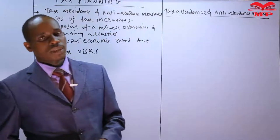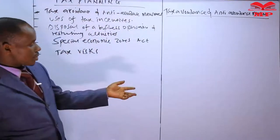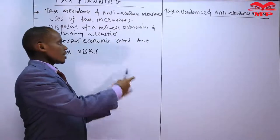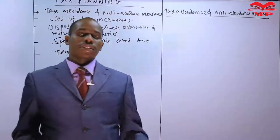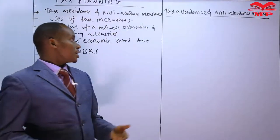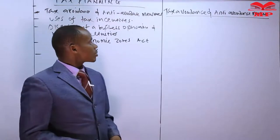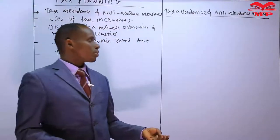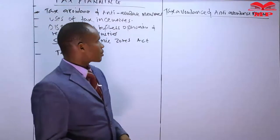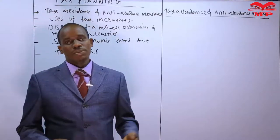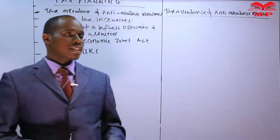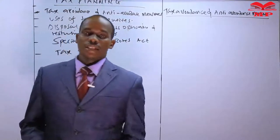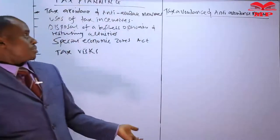Tax avoidance techniques include, for instance, taking advantage of capital allowances. When calculating the taxable profit, you can calculate capital allowances and treat them as an allowable deduction, thereby reducing the taxable profit and tax liability. Also, a manager can opt to finance his business through debt capital, because interest paid on debt is an allowable deduction when calculating taxable profit, resulting in paying less tax.